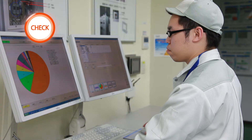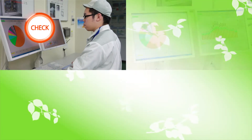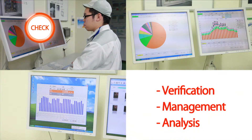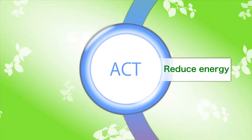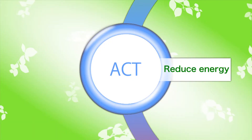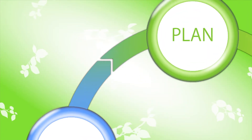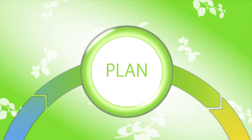C is for Check — you make an analysis utilizing tools and software you can download for free, and you are able to see the wasted part. A is for Action — you take steps for improvements on where you see wasting or inefficiency. With tools and software, you check the result and go on to the next plans.